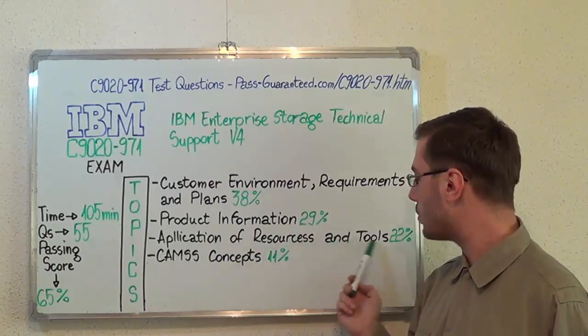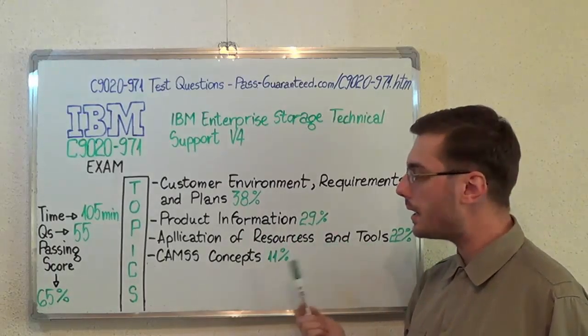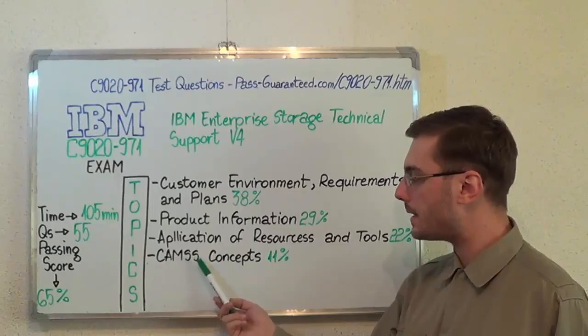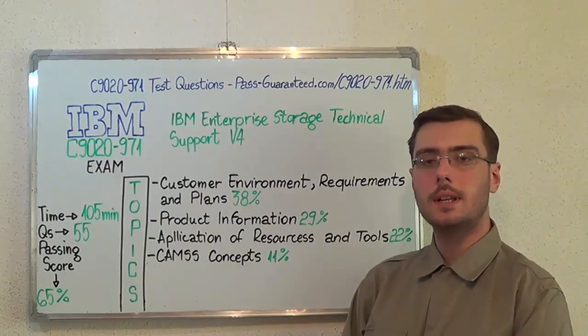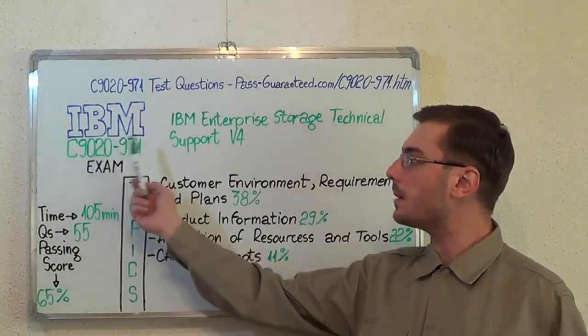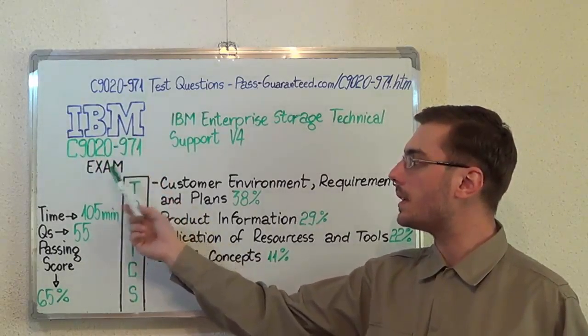After that, Application of Resources and Tools, with 22%. And the last one, CAMSS Concepts, with 11%. You can visit PassGuaranteed.com to successfully pass the IBM C9020-971 exam.